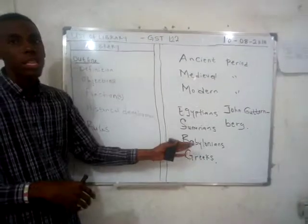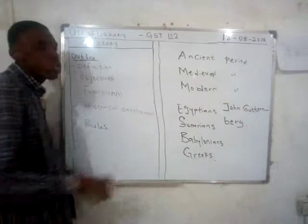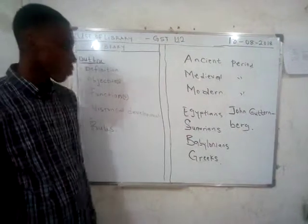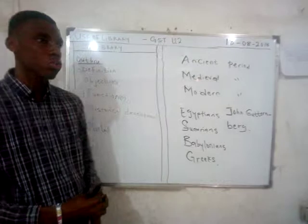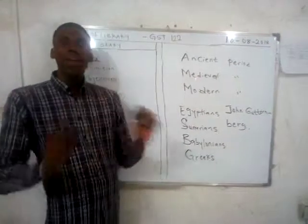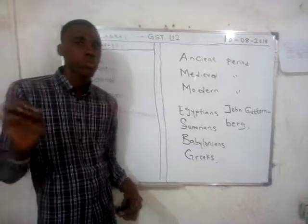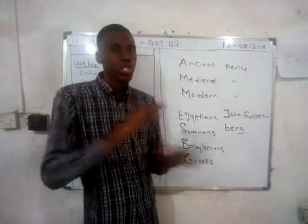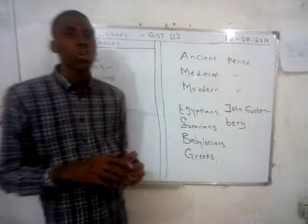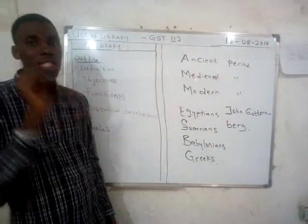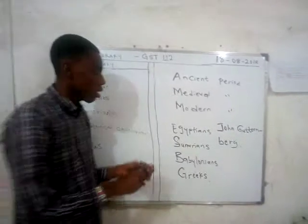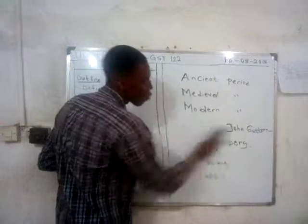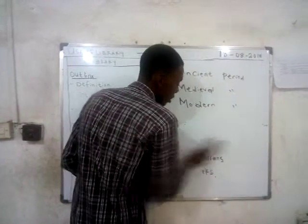Having known a bit about the history, we now look at the rules of the library — the do's and don'ts. One major thing the library detests is the mutilation of books. Mutilation is synonymous with destruction — destroying books. The library does not tolerate its users destroying books, and any books that have been mutilated must be paid for.